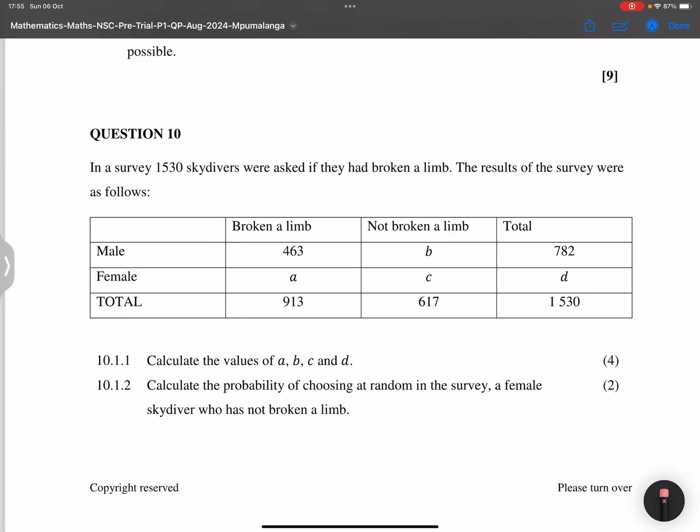All right, now we go on to question number 10. They say to us in a survey, 1530 skydivers were asked if they had broken a limb. The results of the survey were as follows. So there they give us a contingency table. They say calculate the values of A, B, C, and D.